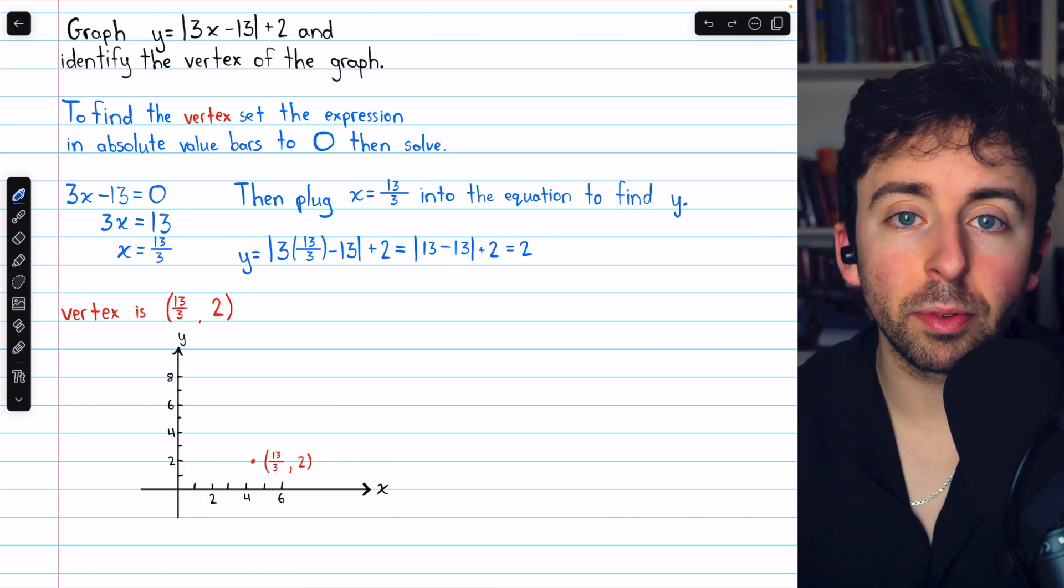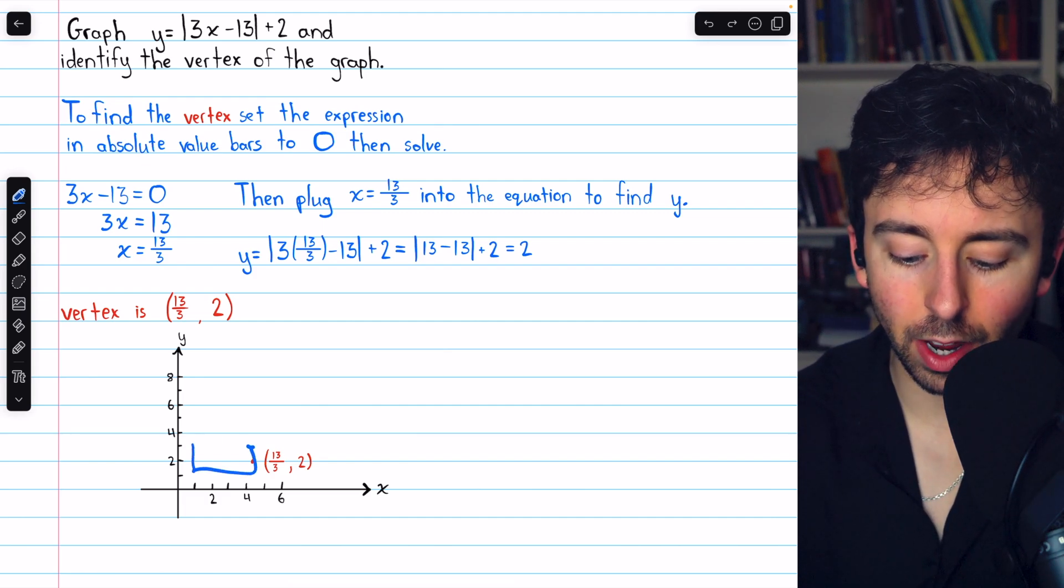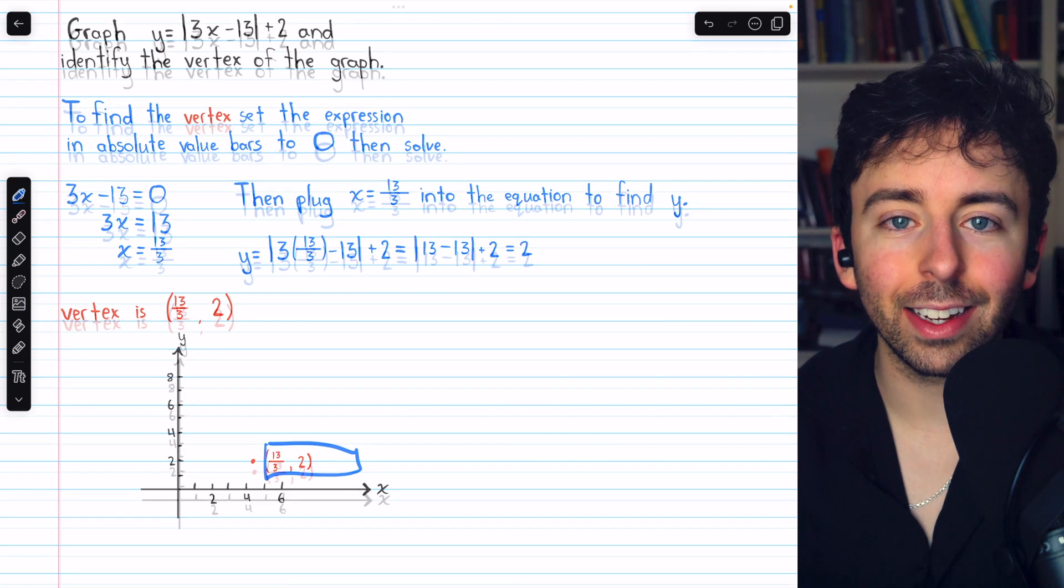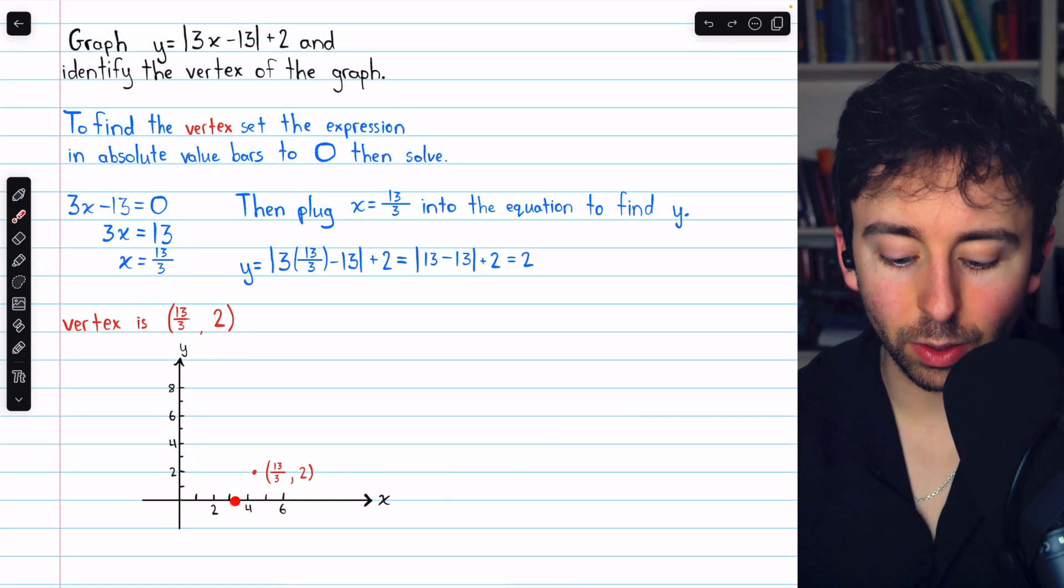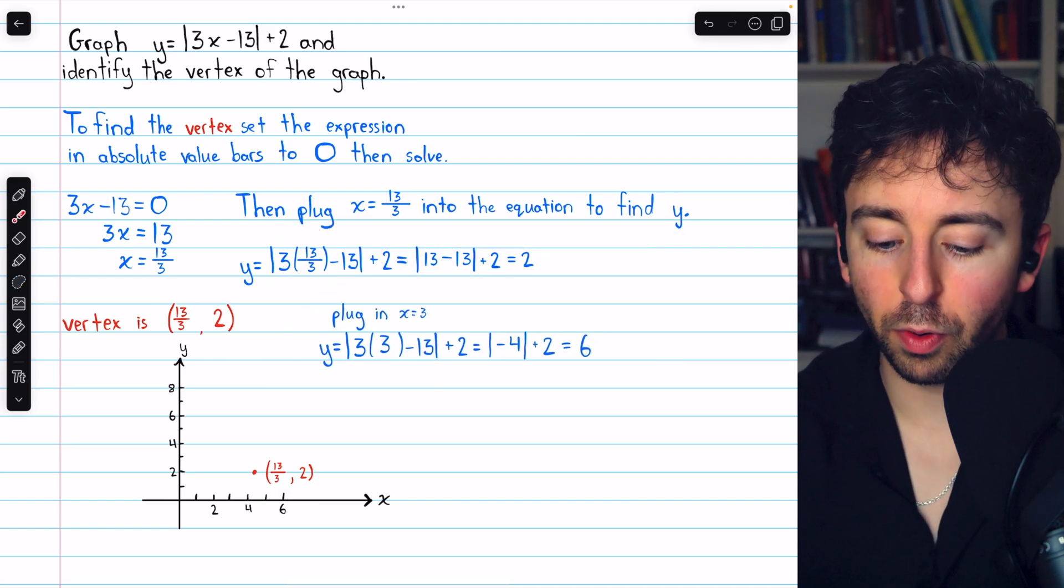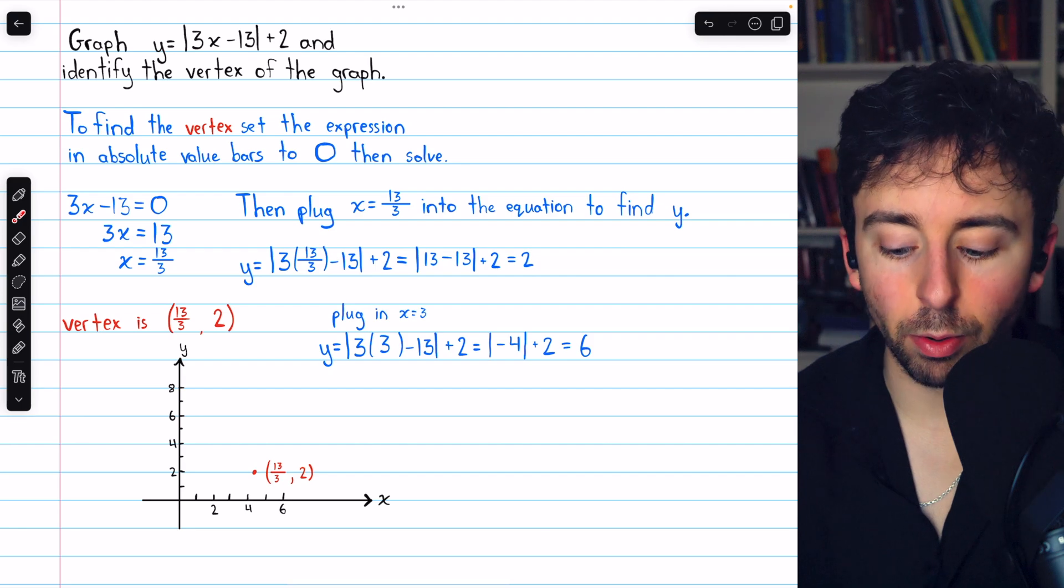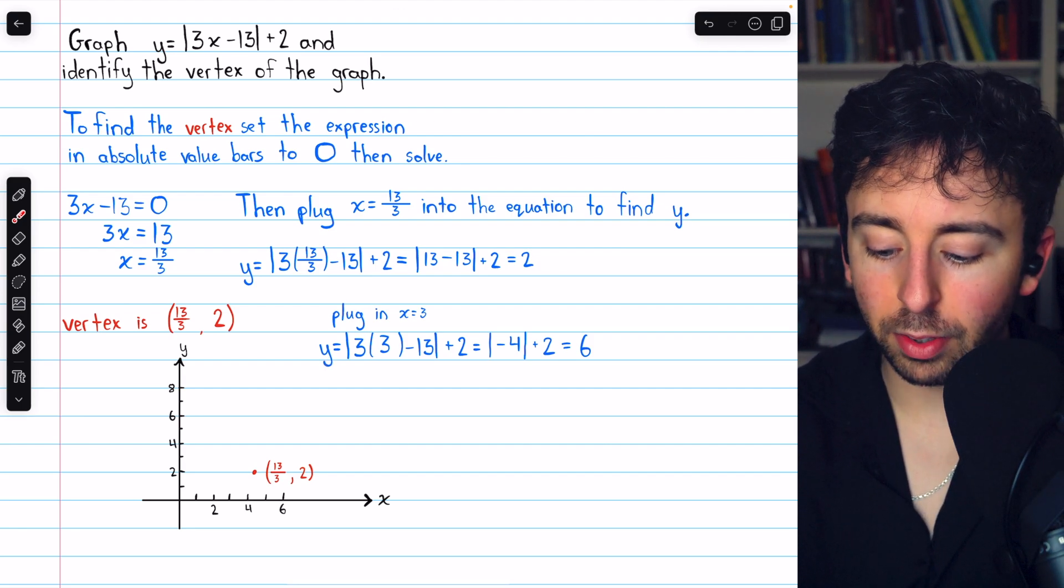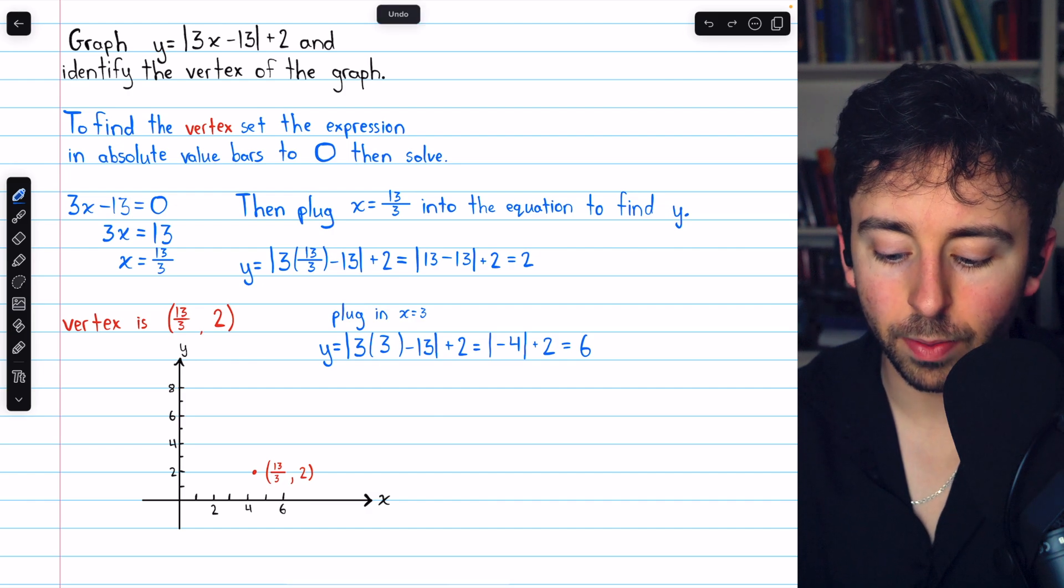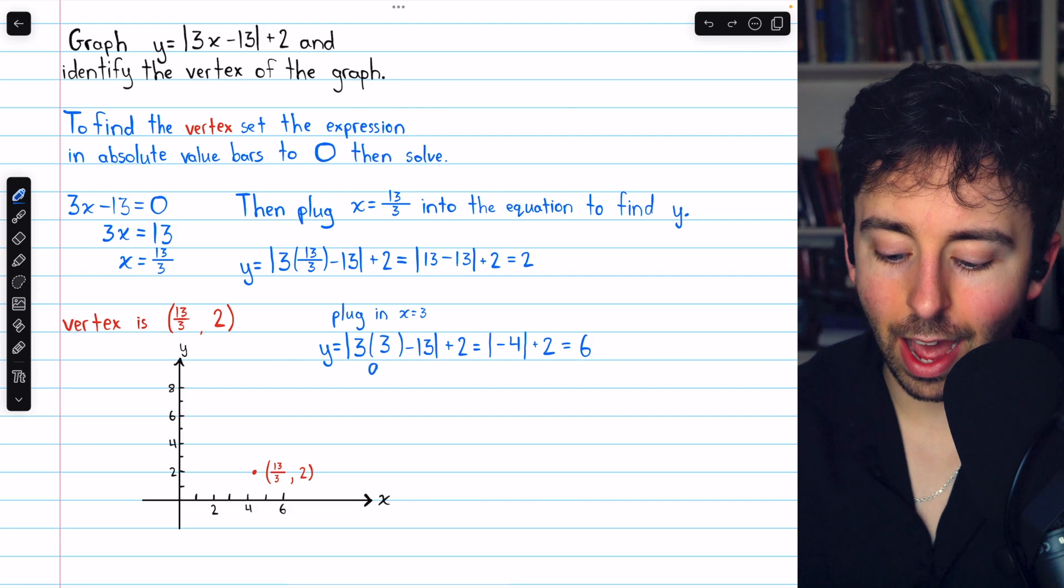Now to get a full picture of the absolute value graph, we want to plug in an x-coordinate to the left of the vertex and a coordinate that's to the right of the vertex. Let's begin by plugging in x = 3. That's to the left of the vertex. So we're going to take the equation as before, y equals all of this stuff, but we're plugging in x = 3. So y equals the absolute value of 3 times x, but x is 3, minus 13, and plus 2.